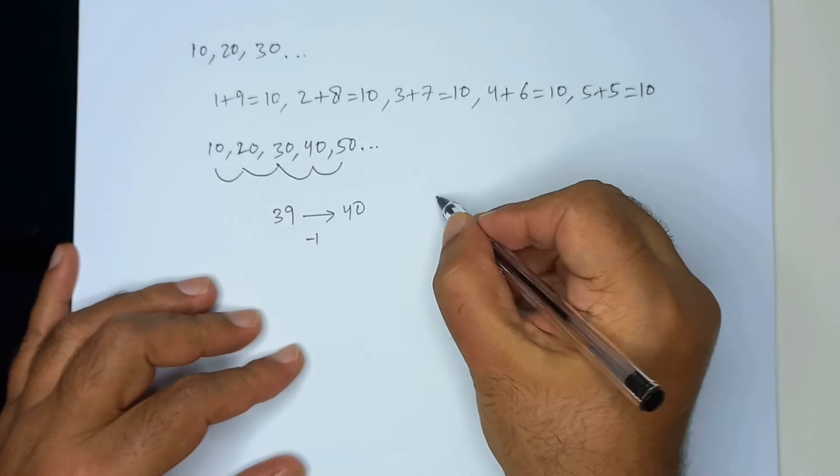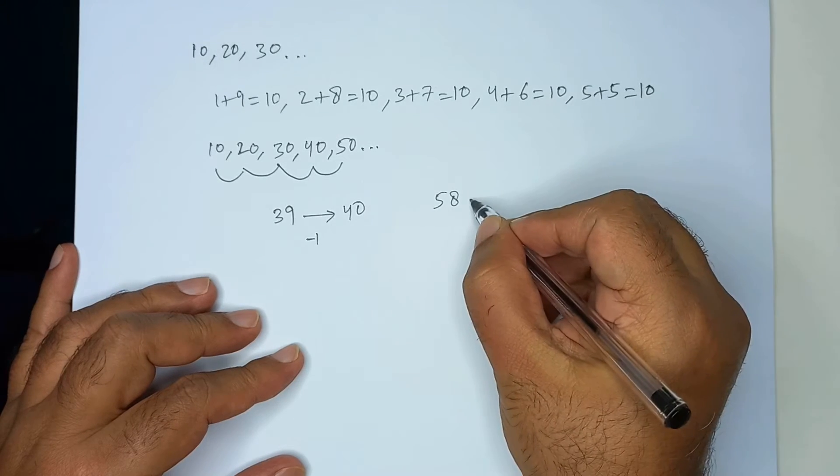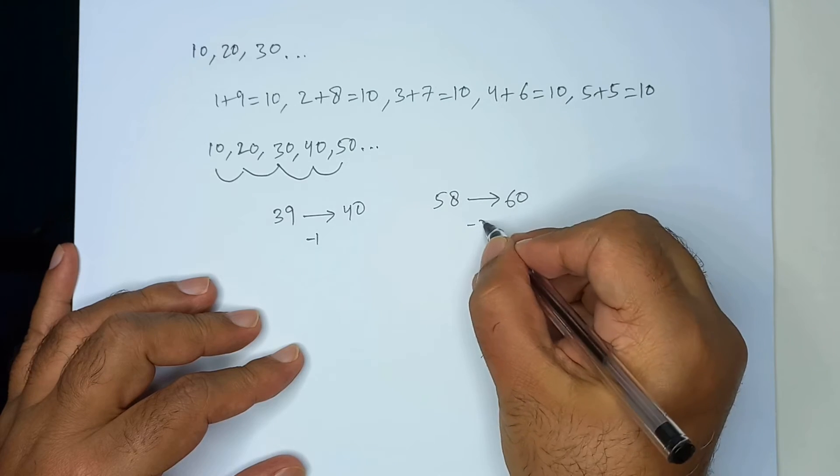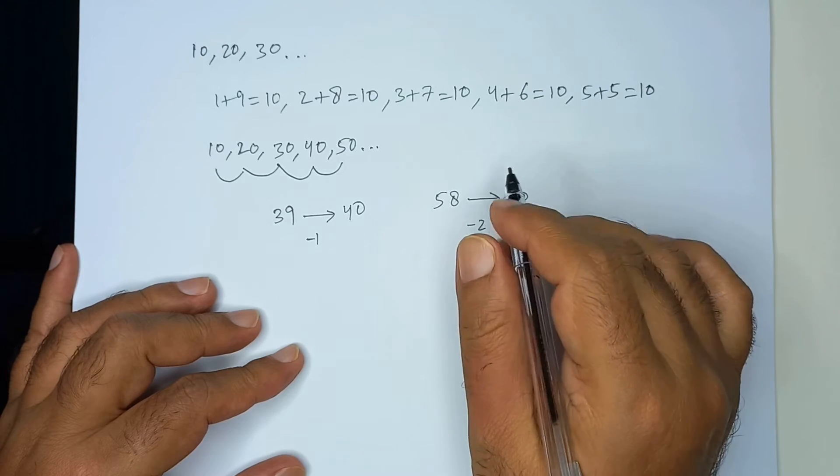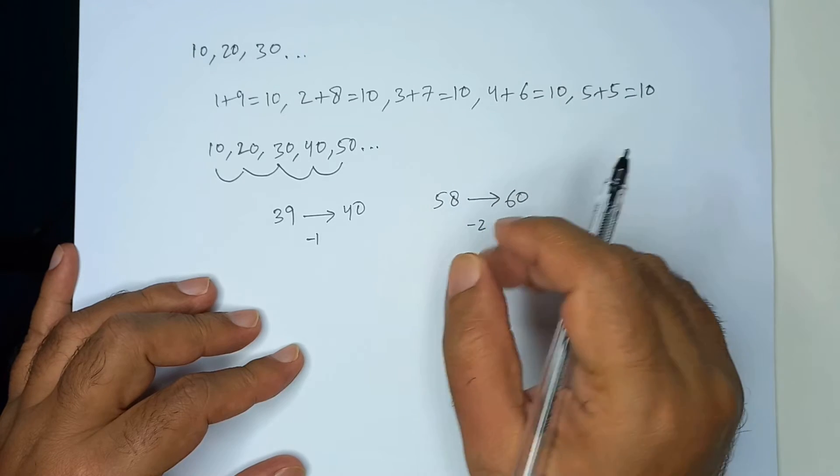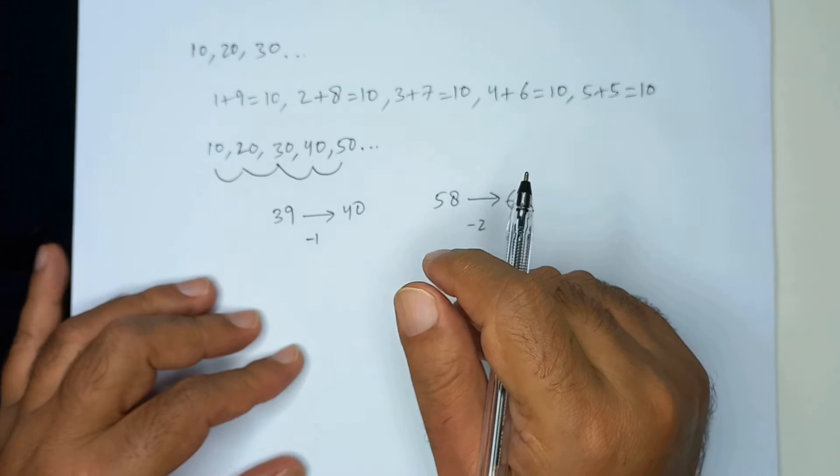And you can also see that, let's say 58, this 58 is close to 60 and is two less than 60. This makes it easier to add and subtract numbers.